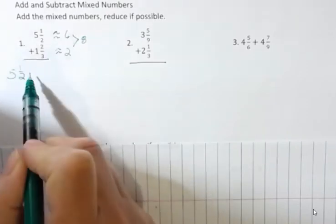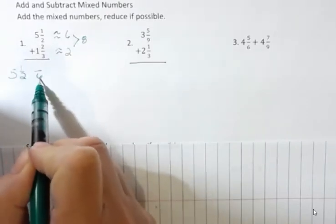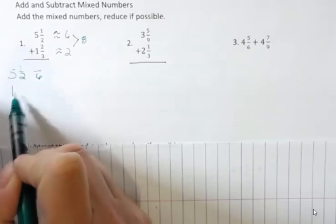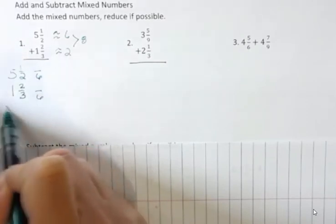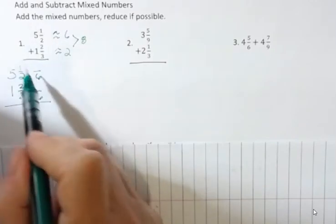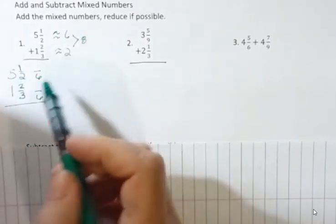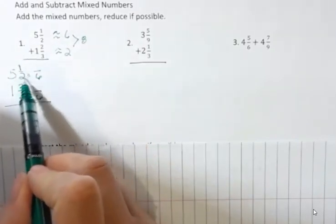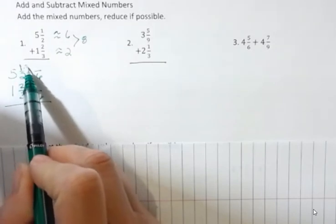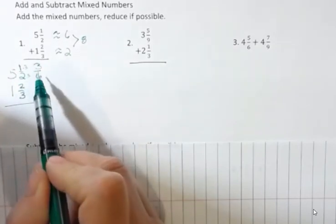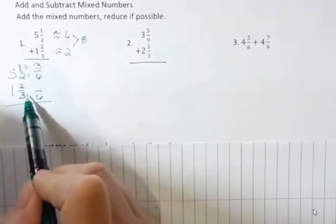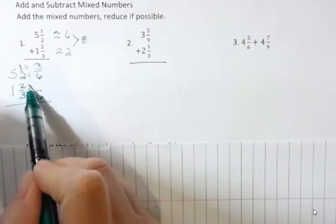Let's come over here and rewrite this problem. Five and a half, I'm going to rewrite this with a six underneath. And one and two thirds, I'm going to rewrite that with a six. I'm not changing the whole number parts because those parts don't need to be changed. So three times two is six, three times one is three. So instead of one half I have three sixths. And three times two is six, so two times two is four.